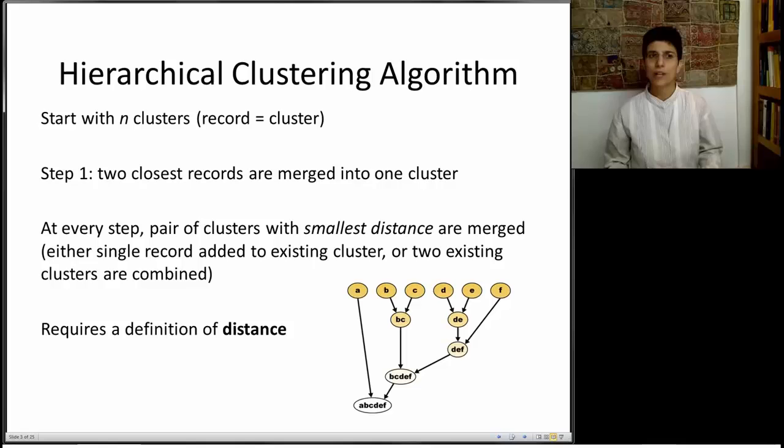So here is a general algorithm. We start out with n clusters, where n is our sample size, the number of records, and each record is its own cluster. In step number 1, we merge the two closest records into one cluster. In this little example down here, b and c are clustered together into a single cluster. From now on, at every step, we're going to be merging the pair of clusters with the smallest distance.